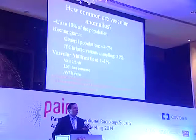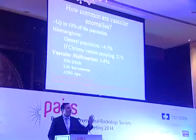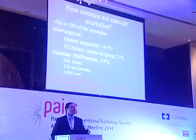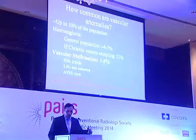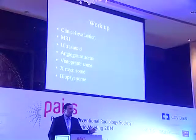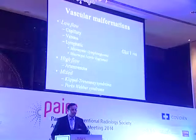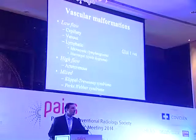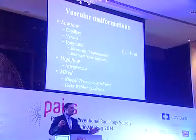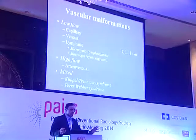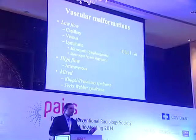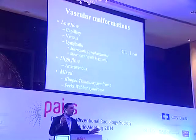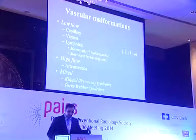Vascular anomalies are common. At least 10 people now sitting in the room will have some sort of pink stain on their skin. Most cases you can just diagnose clinically. Sometimes you will have a problem in diagnosis — it's not always easy and you might need a biopsy. Something useful is GLUT-1 stain, which is positive in hemangiomas and negative in all malformations.